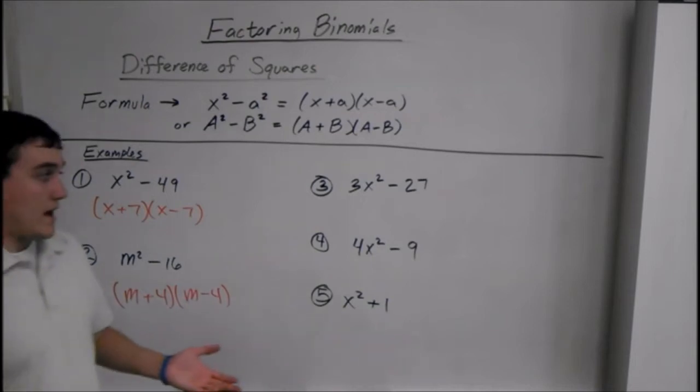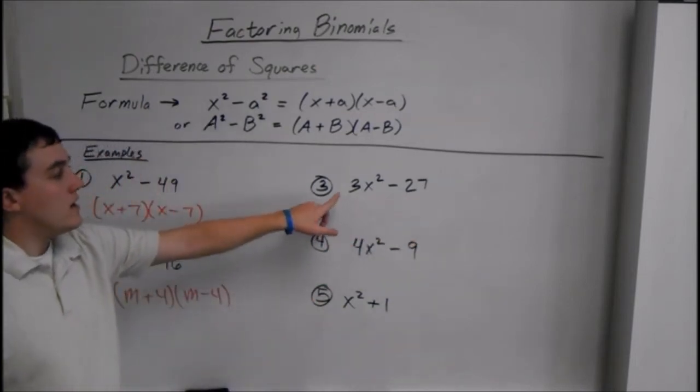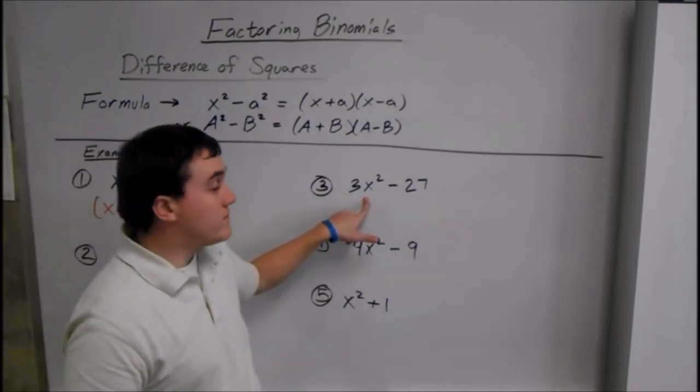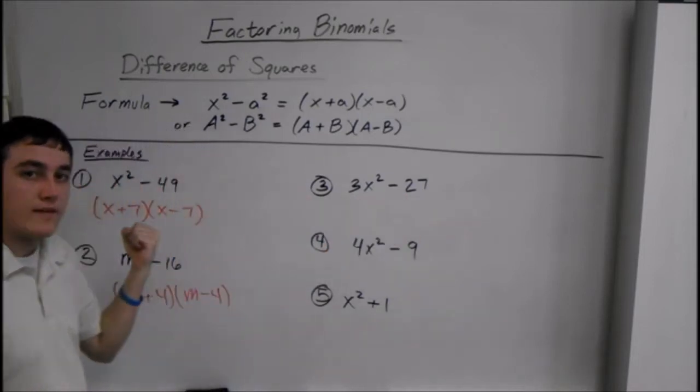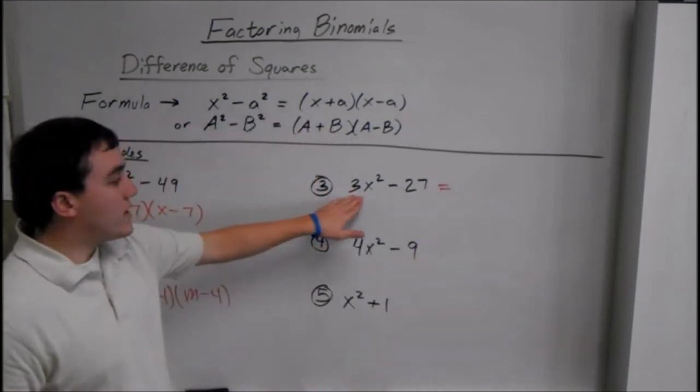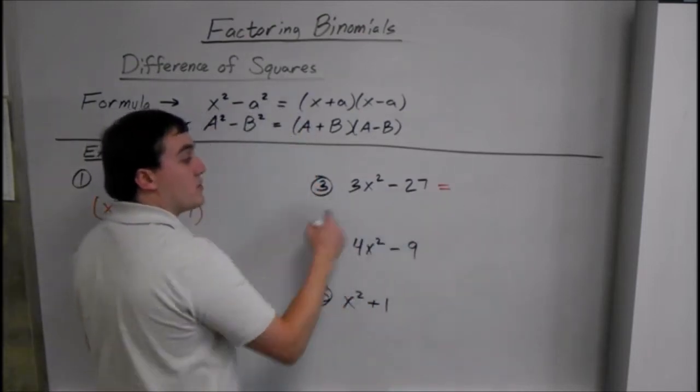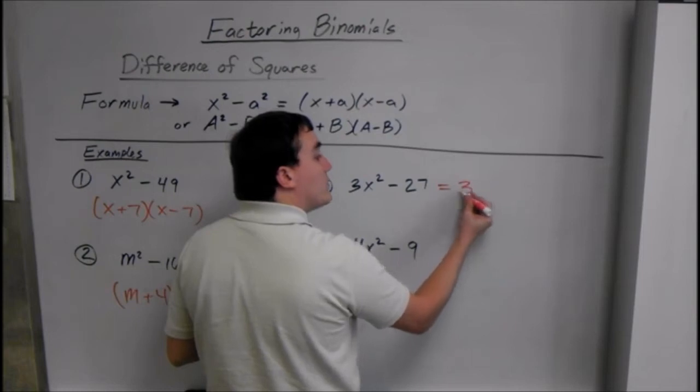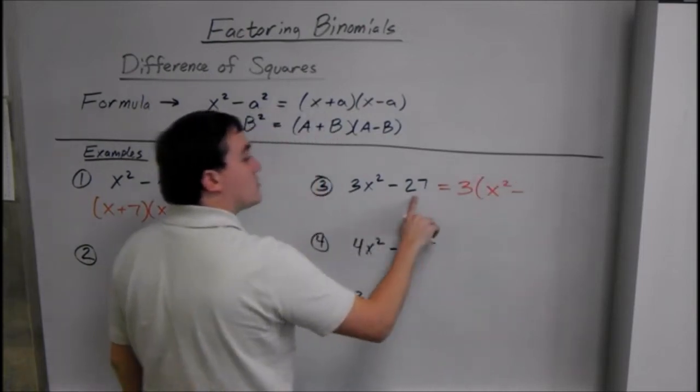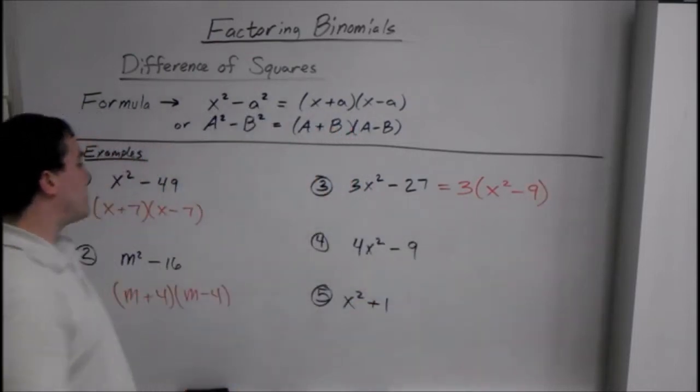Now sometimes you will have an extra step. Here, whenever you're factoring, first you look at both the terms and if they have anything in common. Factoring is taking out what they have in common. You take out their greatest common factor. So, 3x squared and 27, they both have a 3 in common because 3 goes into both of these. So we have to immediately take out the 3. And we're left with x squared minus 27 divided by 3 is 9. And we know how to factor that.